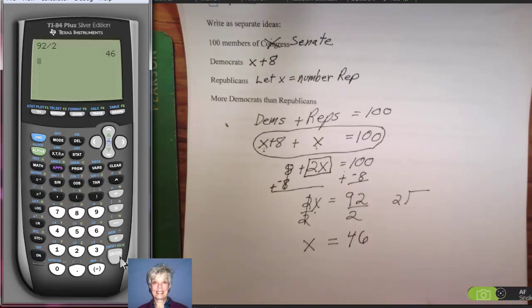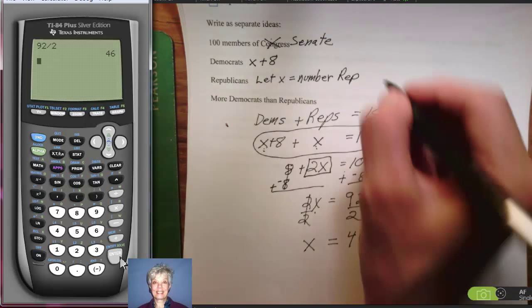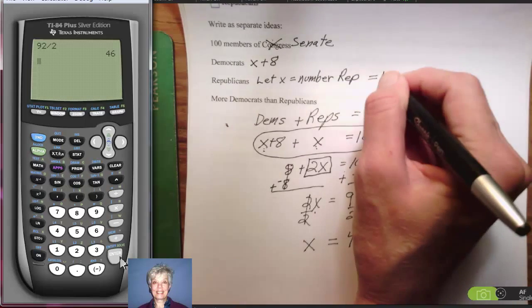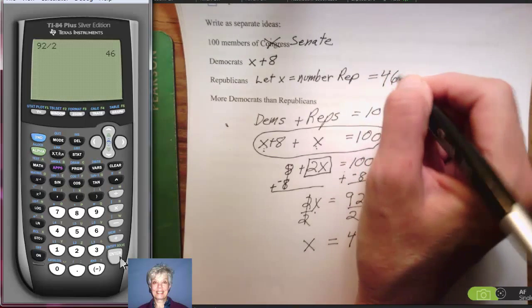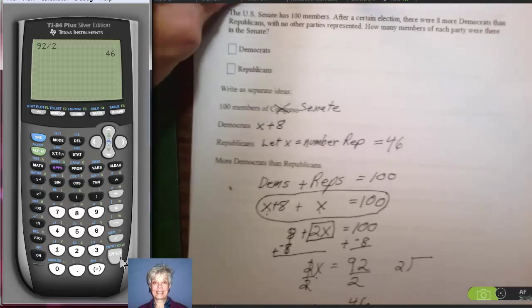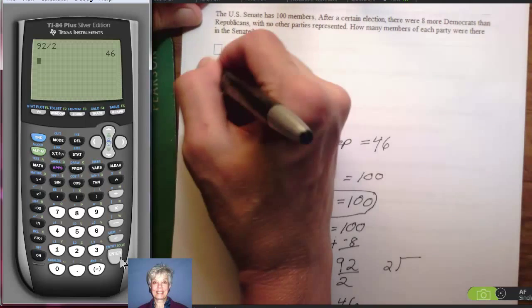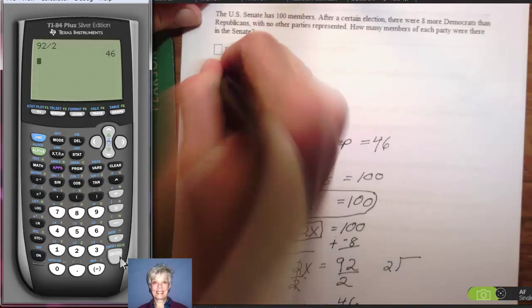Now, because it's a story problem, I have to look back at the original statement of what I let X equal. X is the number of Republicans, so there are 46 Republicans. I'm going to fill out the answer box right here. Remember, there are 46 Republicans.